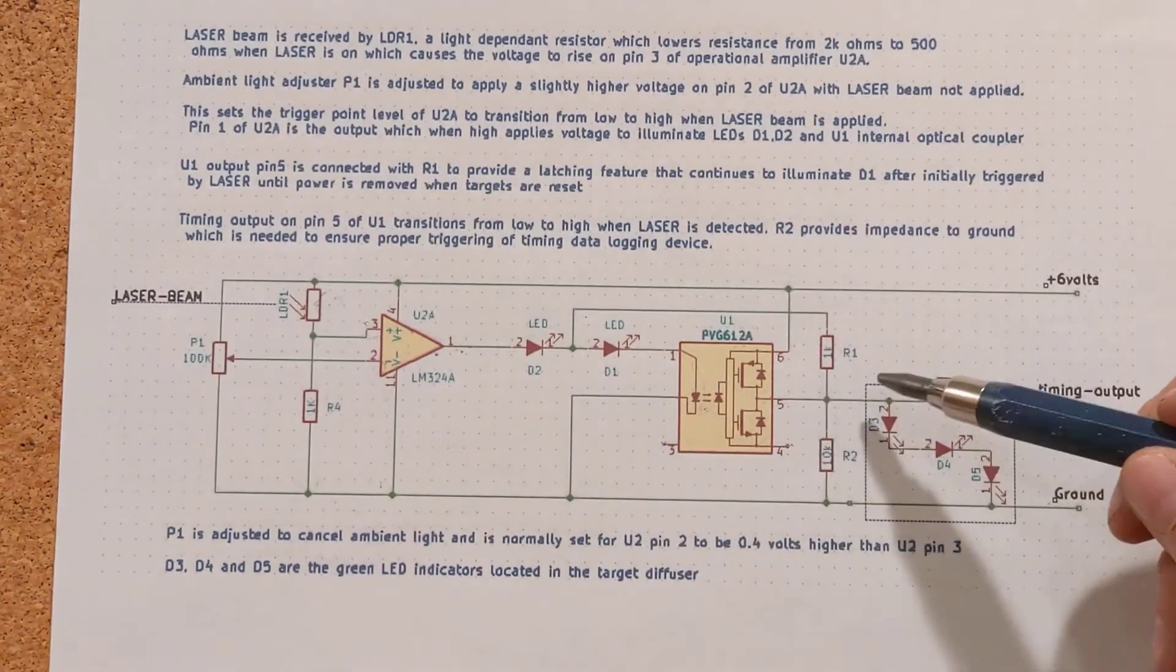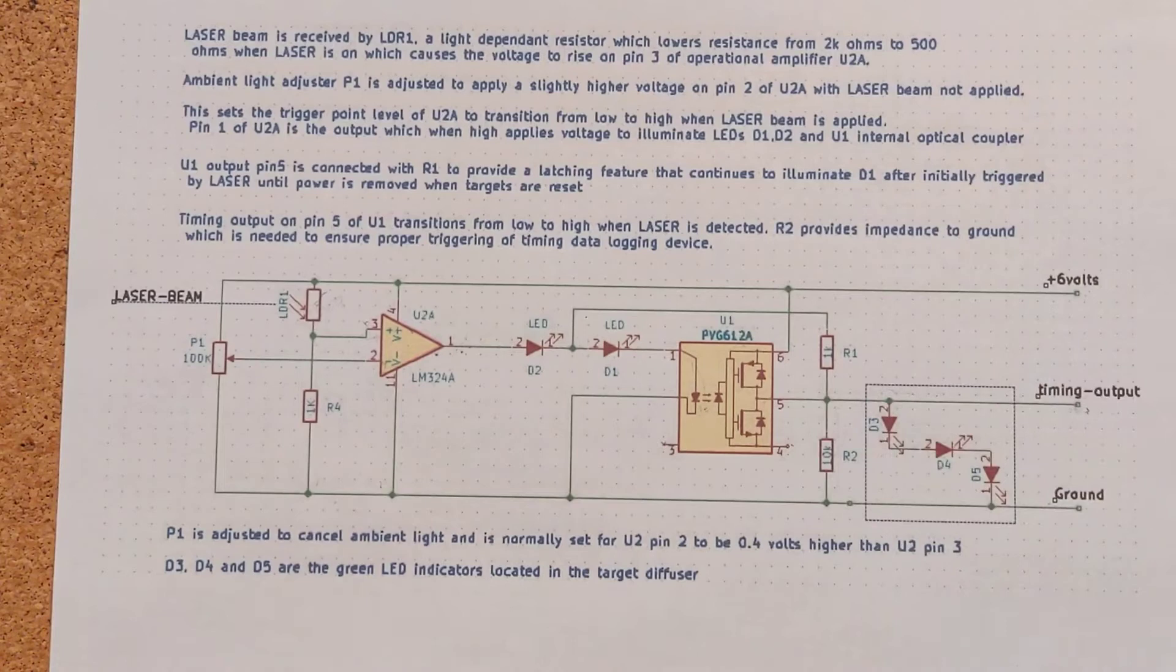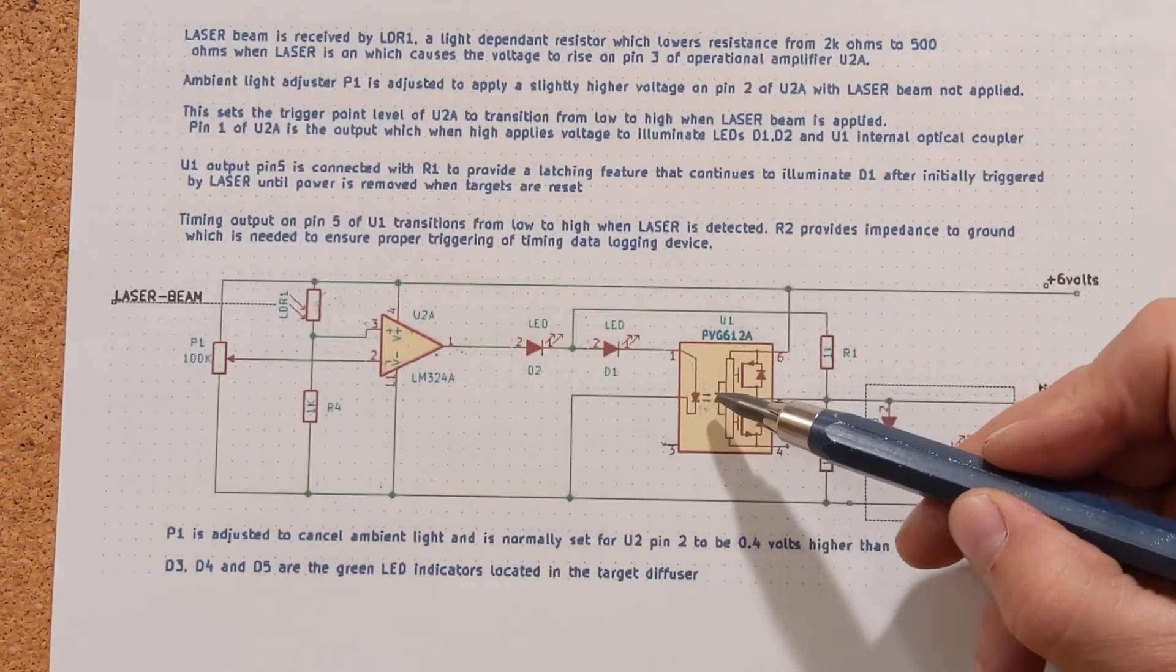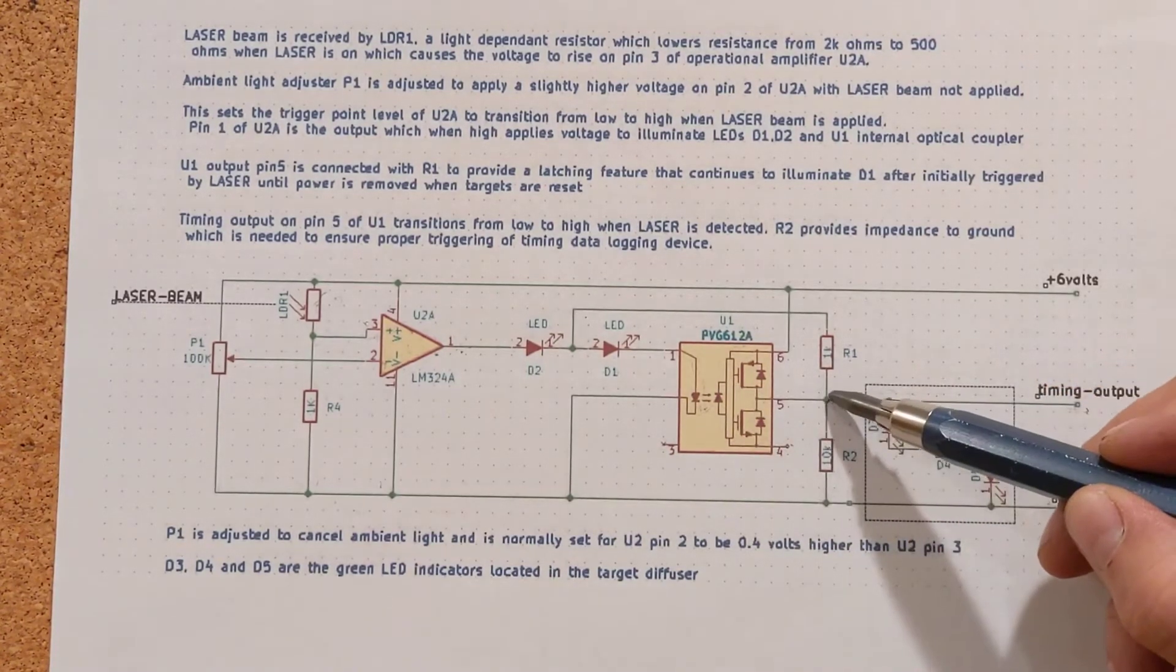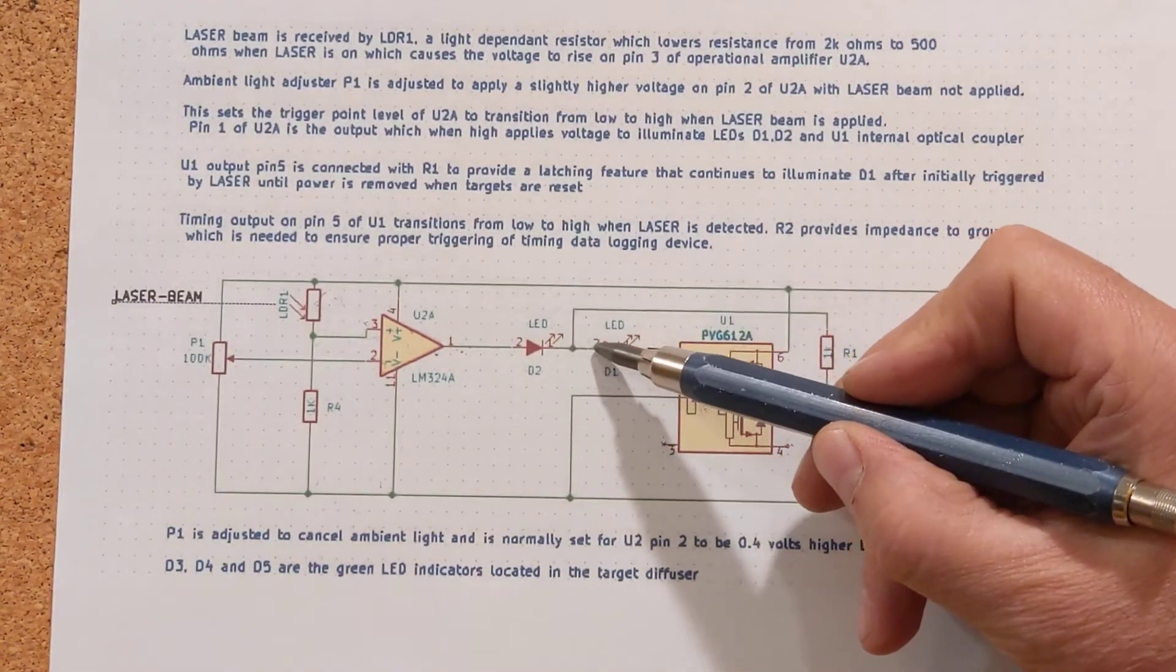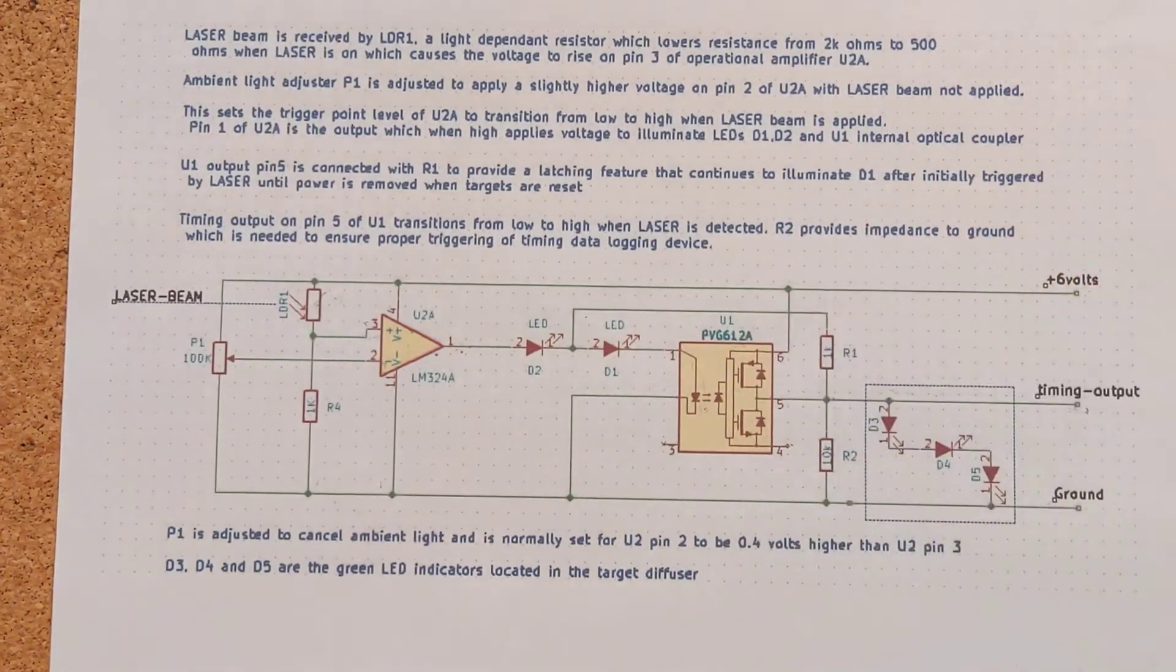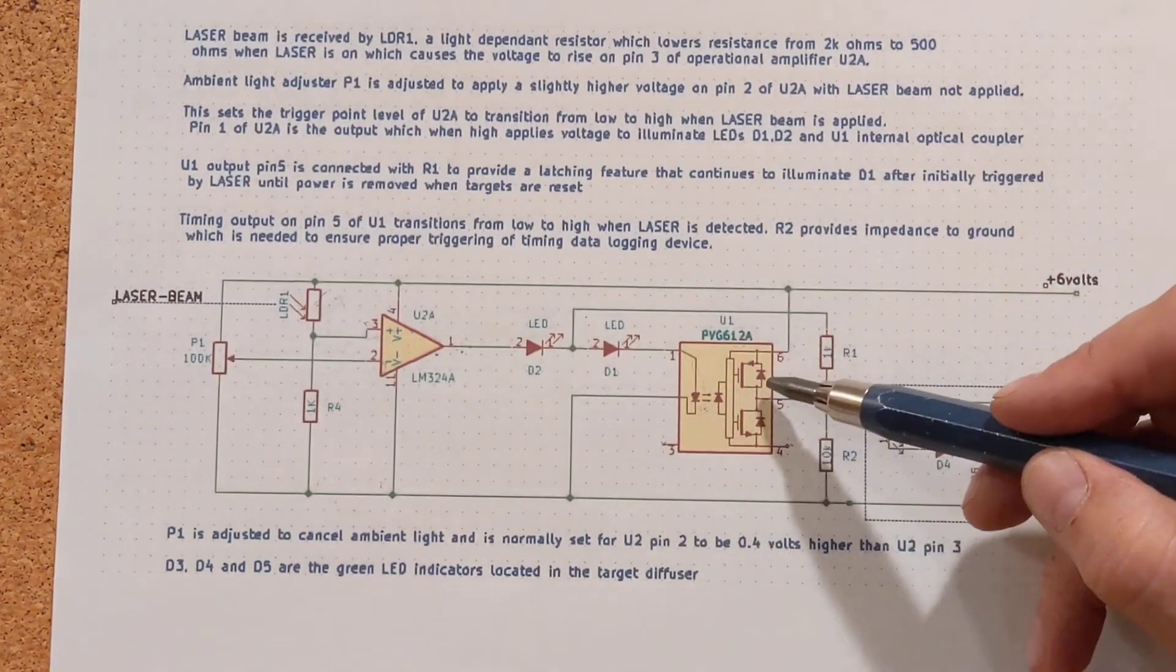There's a feedback resistor here that forms the latching part of the circuit. As soon as the PVG opto relay becomes activated, the output here goes high and it feeds back into this system here, this circuit.